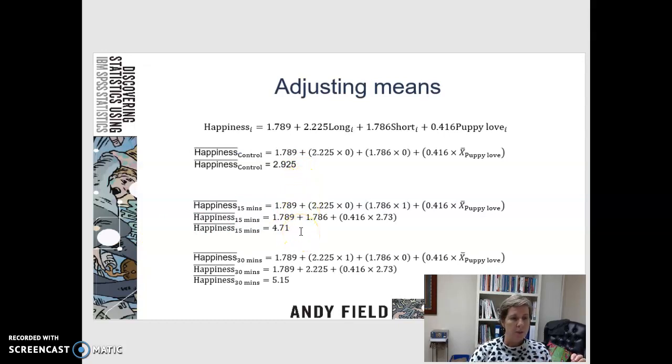So you had a happiness value with no time spent with puppies of 2.95. Here we're using the example of 15 minutes. We want to cancel out the 30 minutes, so you multiply that by zero and you say, I've got 1.786 multiplied by one. He talks a little bit in the book about dummy coding. And I've got my puppy love. So this is taking into account how much you love puppies on average and spending 15 minutes with a dog. What is our prediction of happiness? Our prediction of that happiness is 4.71.